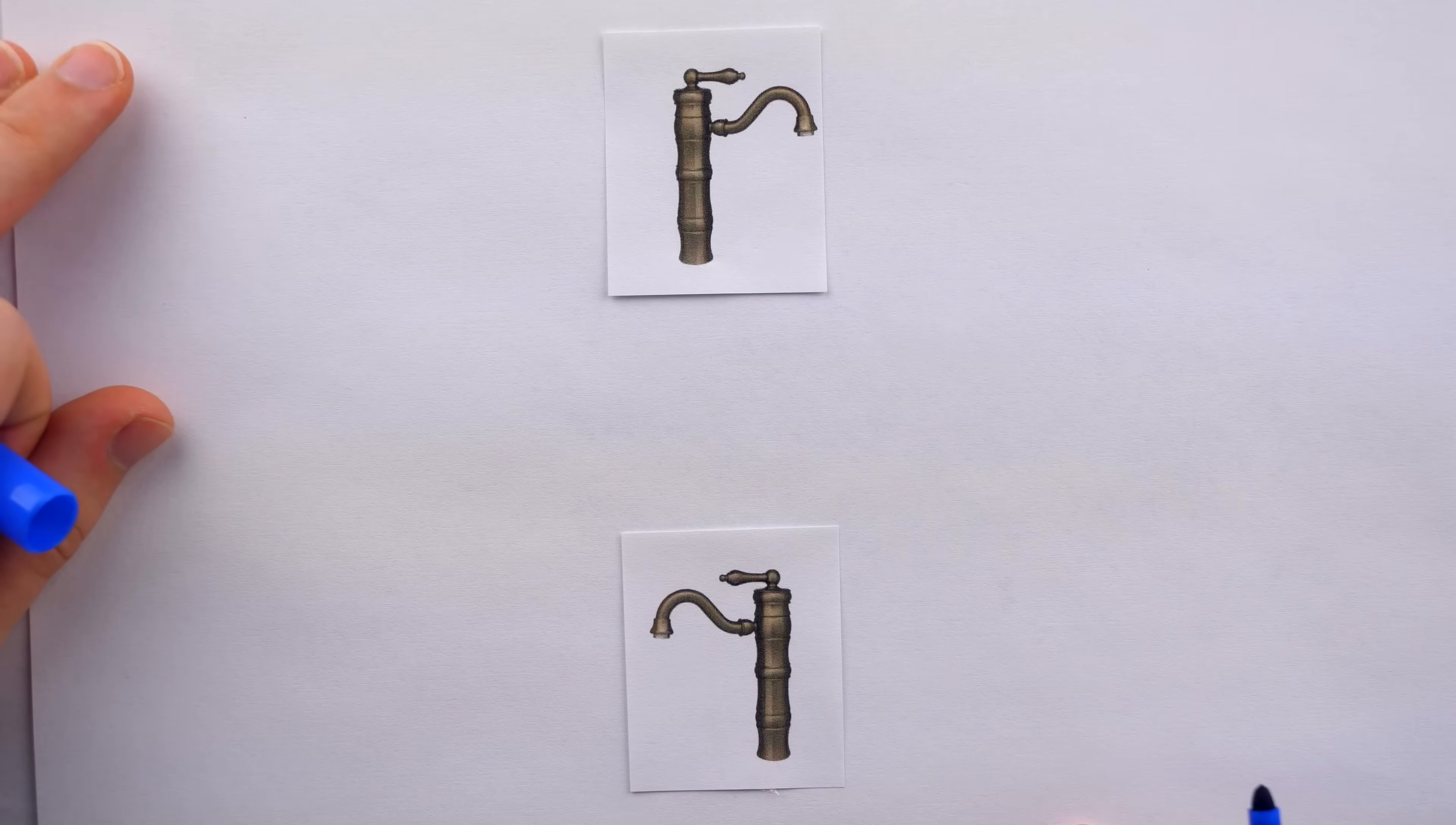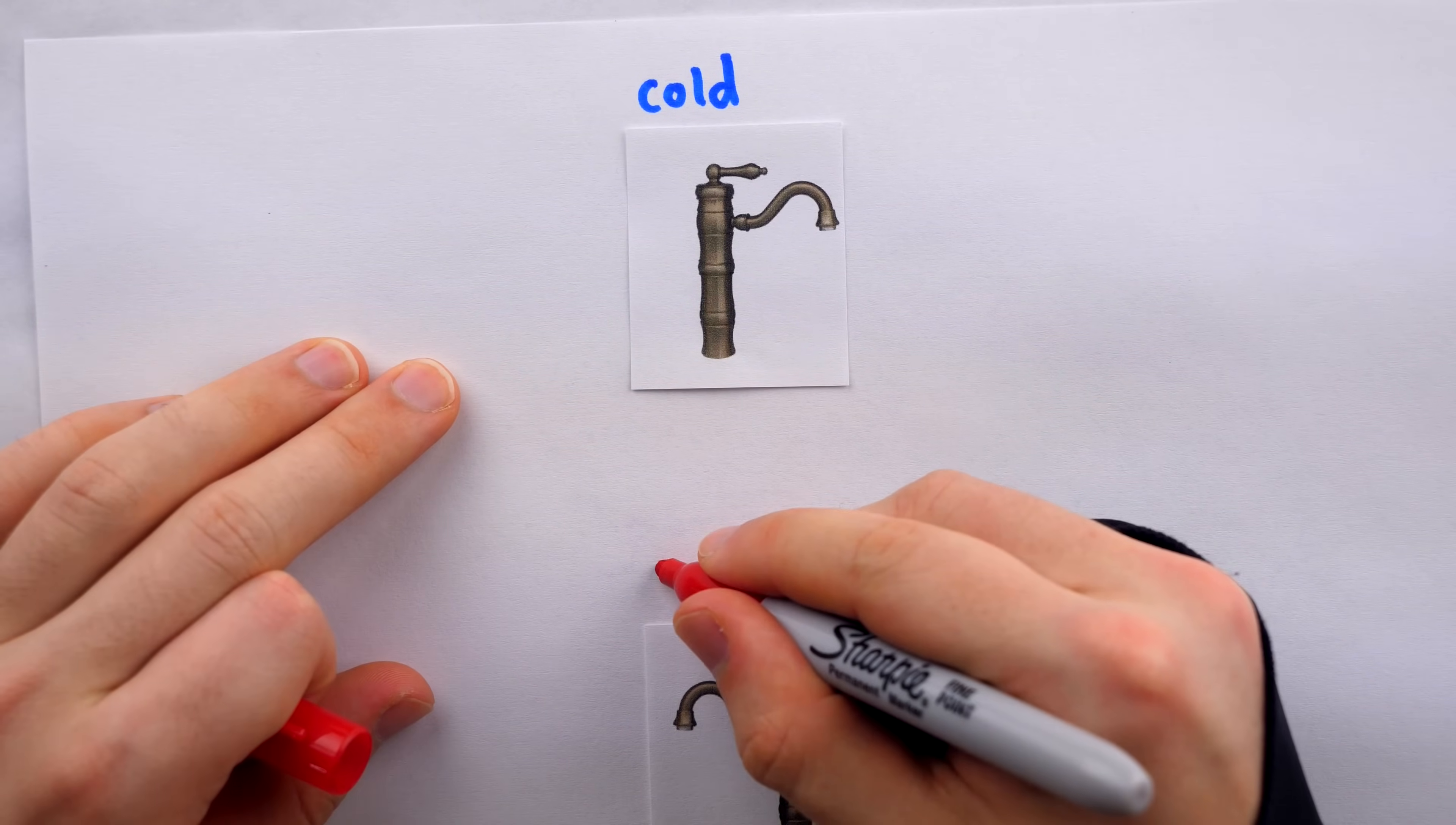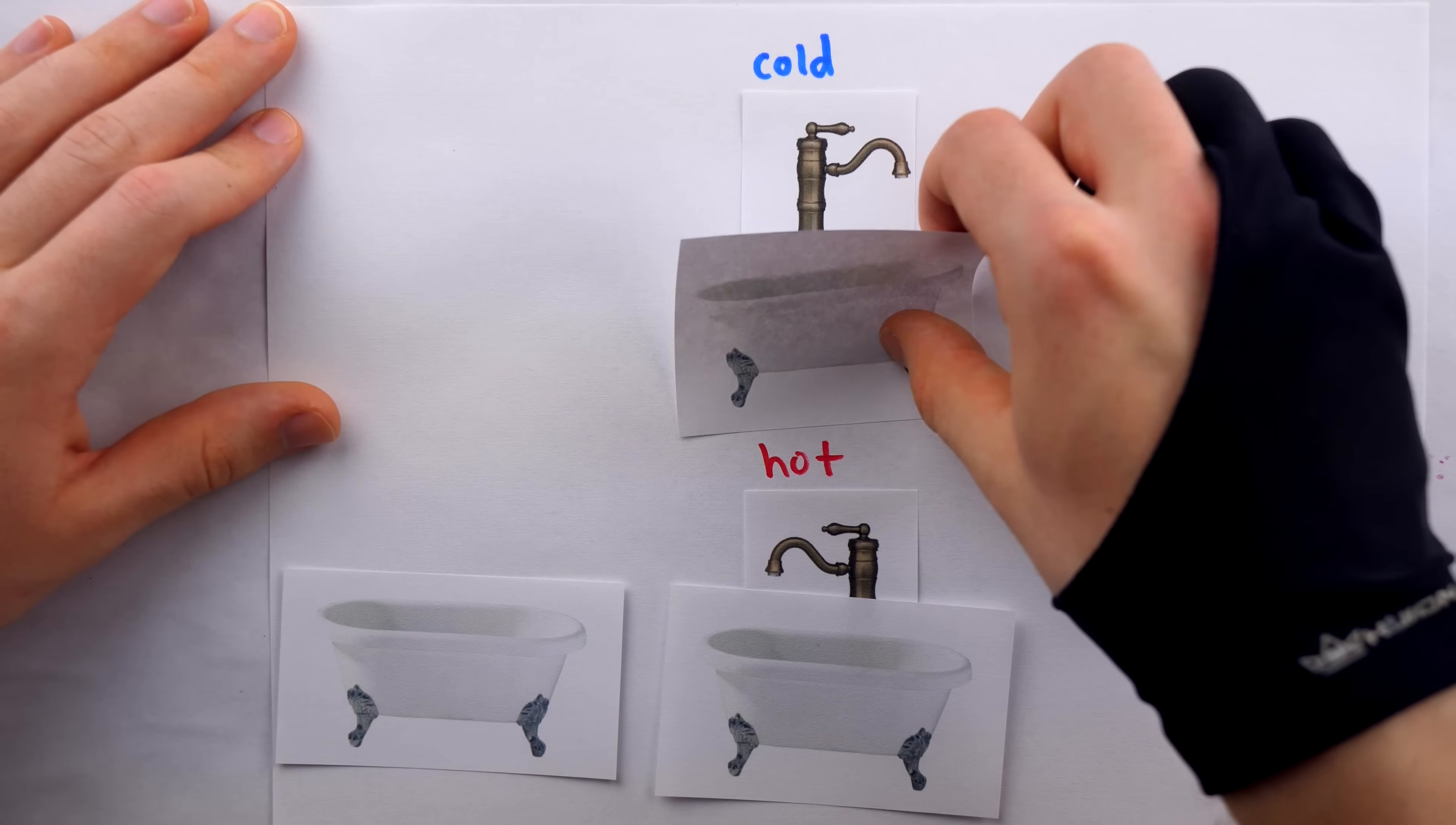He says to imagine two conveyor belts. One is taking tubs through the cold water faucet and the other is taking tubs through the hot water faucet. A tub will sit here getting filled up, for the cold water faucet it would take 30 minutes, then it would move on all filled up with water and the next tub in line would move on.